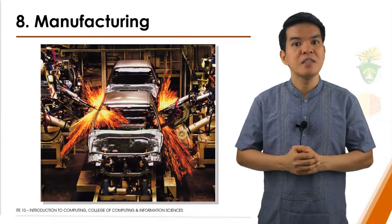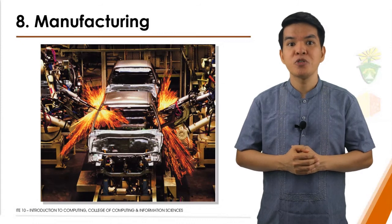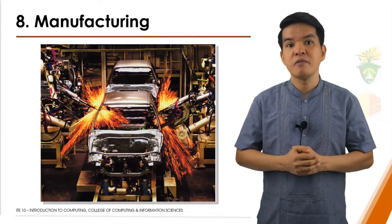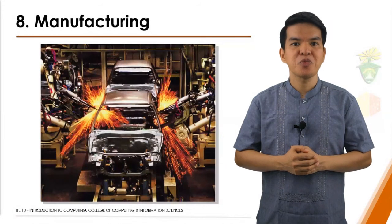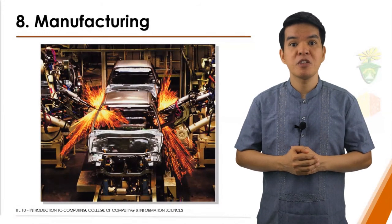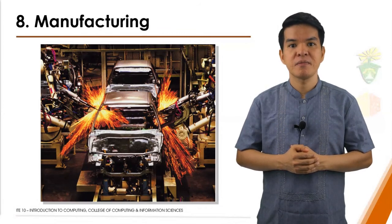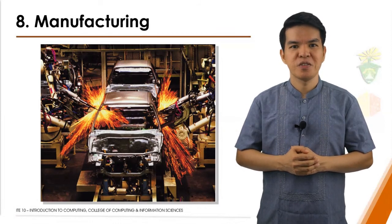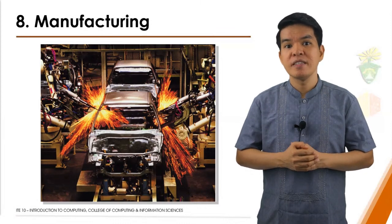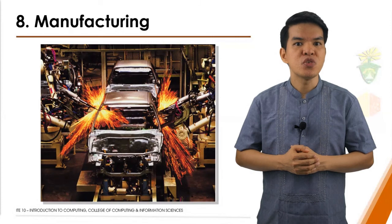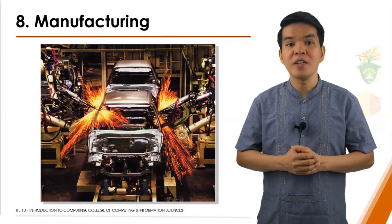Today, the manufacturing industry has embarked on computer-aided manufacturing. This refers to the use of computers to assist with manufacturing processes such as fabrication and assembly. Often, robots carry out processes in a CAM environment. CAM is used by a variety of industries, including oil drilling, power generation, food production, and automobile manufacturing. The image shows automotive factories which use industrial robots to weld car bodies.